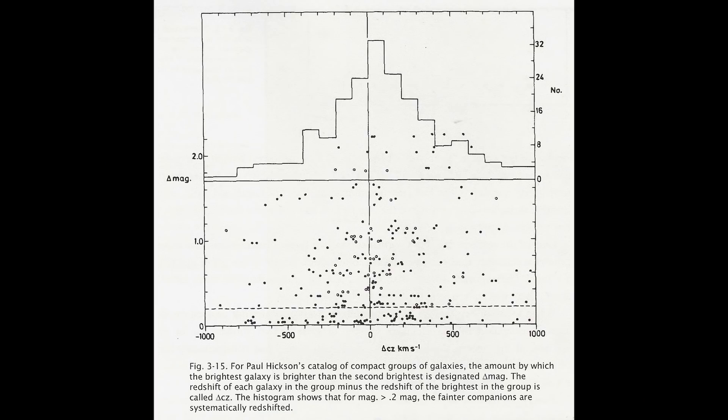In the intervening years Paul Hickson has catalogued, photographed and measured redshifts in a sample of over 100 compact groups. And when we examine the evidence from his catalogue we can clearly see the difference in apparent magnitude between the brightest and the next brightest galaxy becomes larger. The number of positively redshifted companions becomes larger too. And this shows that one galaxy is dominant within the group.